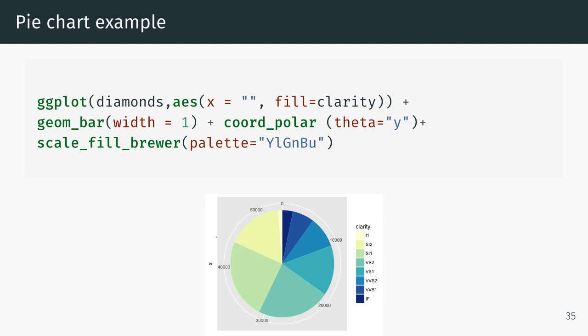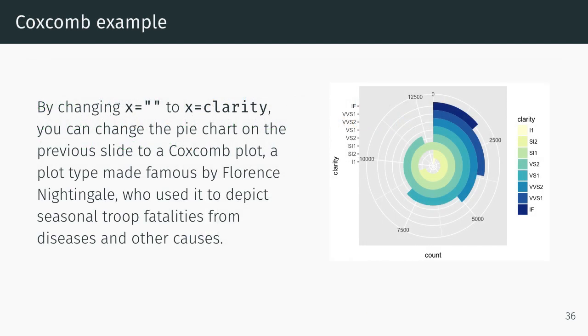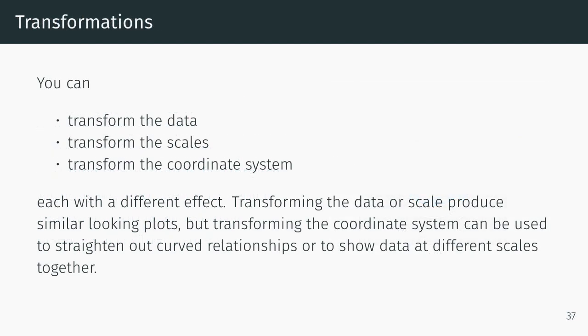So she created this system called Color Brewer for doing that, and it's incorporated into ggplot2 and R. Let me move on to changing the x from nothing to x equals clarity. You can change the pie chart to a coxcomb plot, which is the plot type Florence Nightingale used to depict seasonal troop fatalities from diseases and other causes. She created plots that were very influential on the British Parliament in providing medical attention to troops because they assumed troops were being killed by gunshot wounds when in fact they were being killed by infections that were preventable.